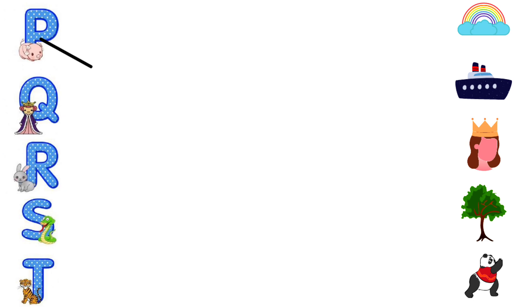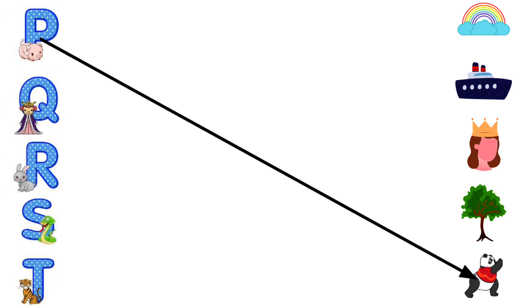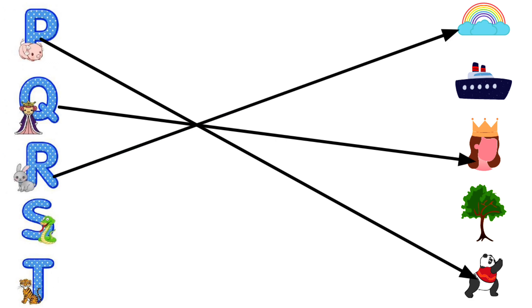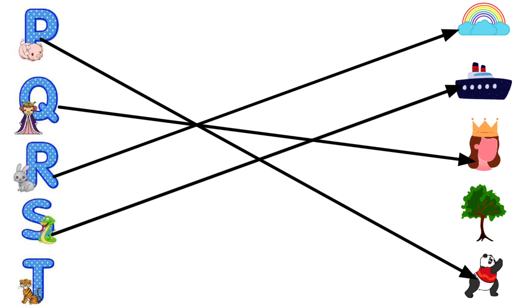P for Panda, Q for Queen, R for Rainbow, S for Ship.